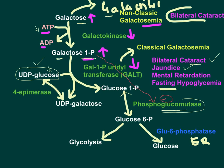Mental retardation is also observed in classical galactosemia. There is no single definitive explanation, but the overall lack of ATPs may lead to neurodegeneration and decreased nerve metabolism, contributing to mental retardation. The observation is that the majority of patients with classical galactosemia will have mental retardation.